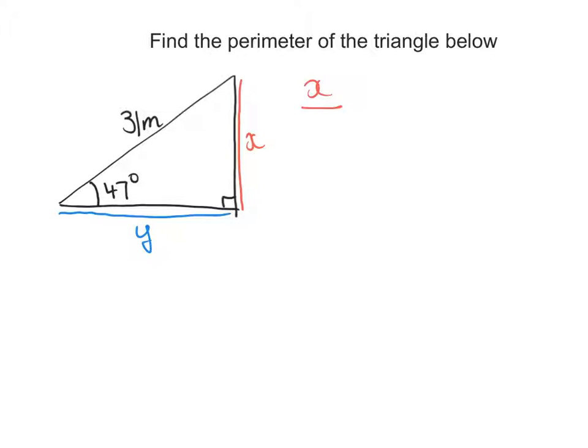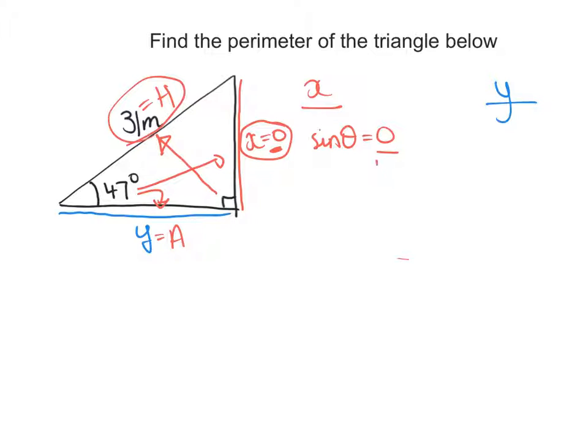So for x, let's see. Straight across from my reference angle is the opposite side. And straight across from the right angle is the hypotenuse. And right next to my reference angle is the adjacent side. Now if I'm working out x, I want to figure out the opposite side and I'll use the hypotenuse. The opposite and the hypotenuse is sine of theta.